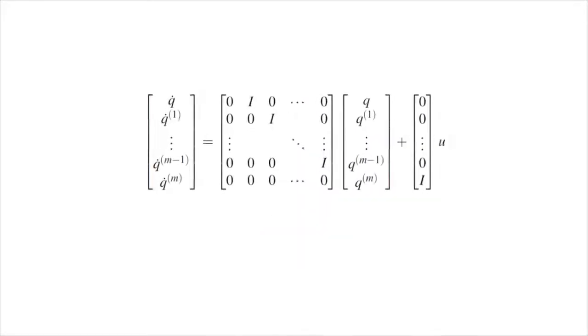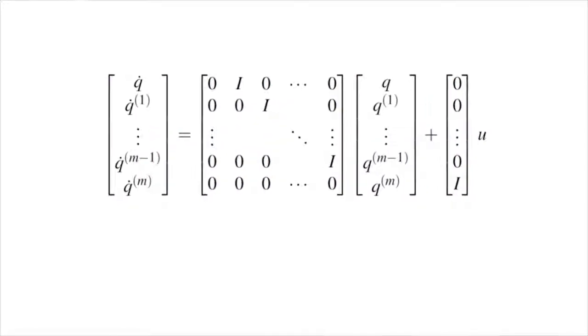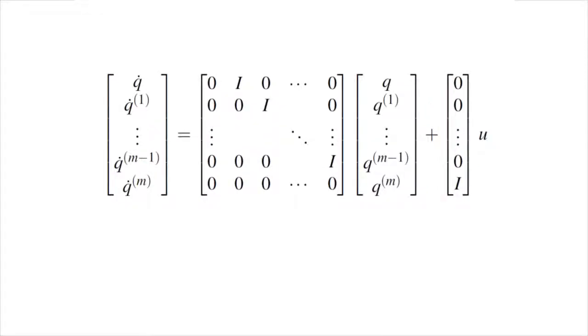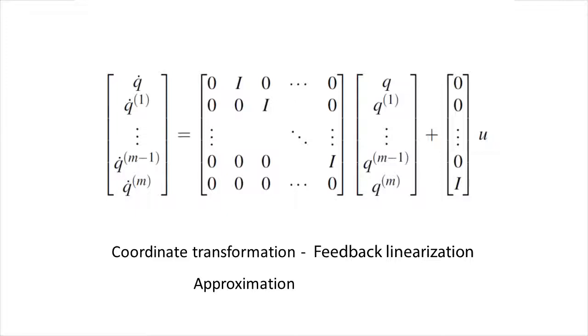We extend our strategy to agents with higher order dynamics that can be expressed in the controllable canonical form. Since, through coordinate transformation techniques such as feedback linearization or approximation techniques such as linearization, dynamics of many systems can be expressed in this form, our strategy encompasses a large class of systems.